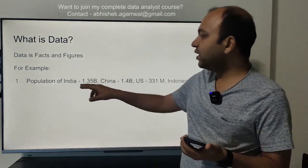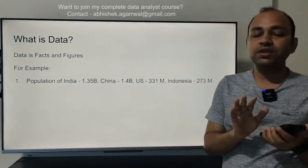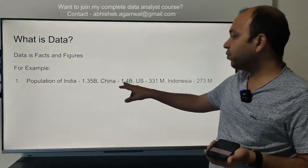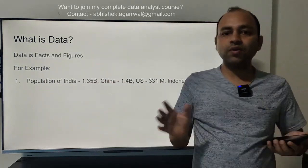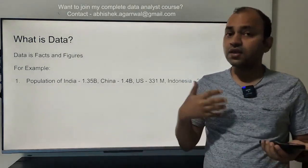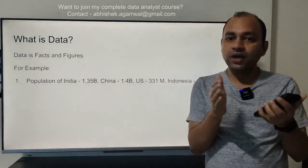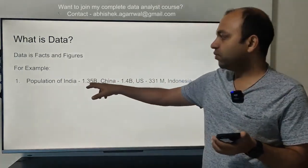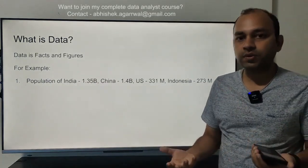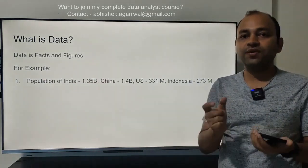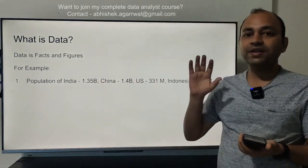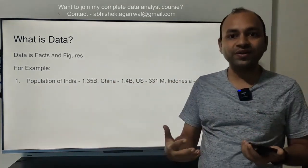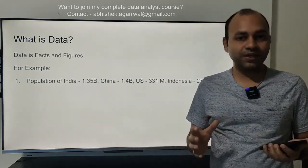If I just tell you India, China, US, Indonesia — those are names of countries. If I just tell you 1.35, 1.4, 331, 273 — you will never get an idea what those figures represent. But when you pair them together, like India 1.35 billion, it shows population because the two are related. The relation between facts and figures makes data more interesting, and that's where all the amazing things happen in data analysis.